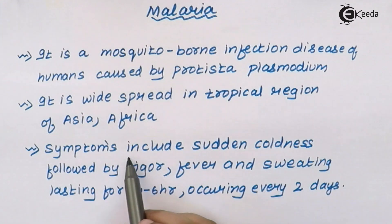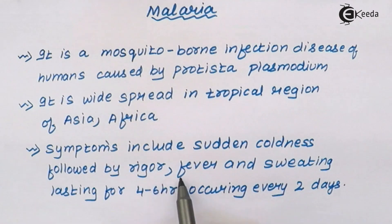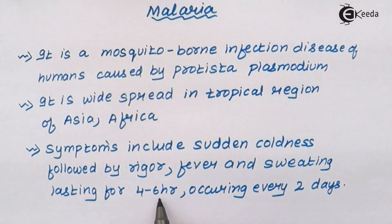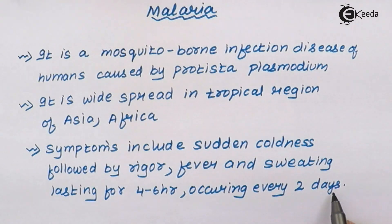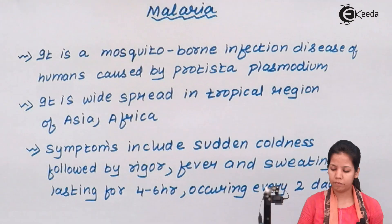Symptoms of malaria could include sudden coldness, followed by rigorous fever and sweating, that may last for four to six hours, occurring every alternate two days. This is basically the hot and cold stage of malaria — the classic symptom of the disease.